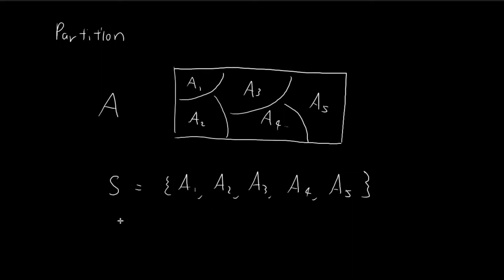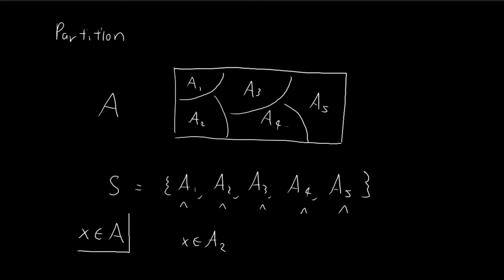It's called a partition because for every single element X of A, we can be sure that X will be in exactly one of these subsets. So if X is an element of A2, you can be sure X will not be in any other subset. A partition is a way of carving up a set such that every single element in your original set belongs in exactly one subset.